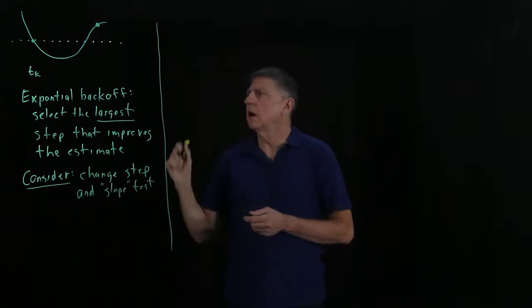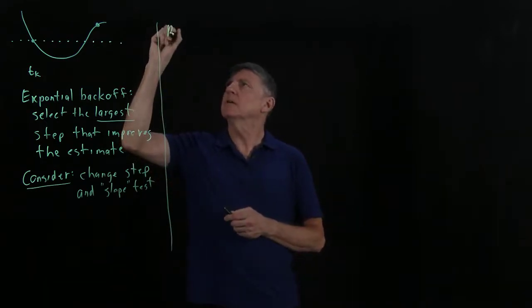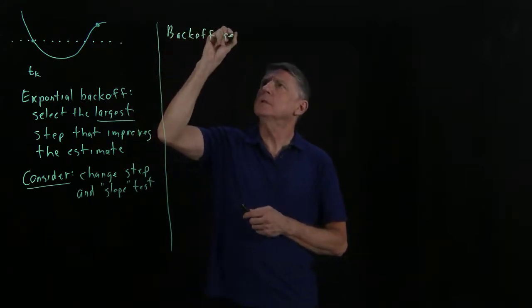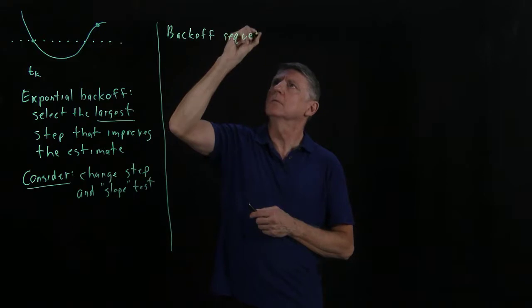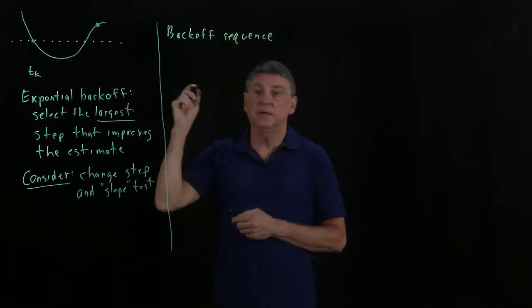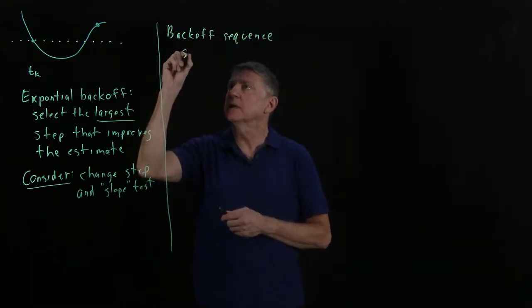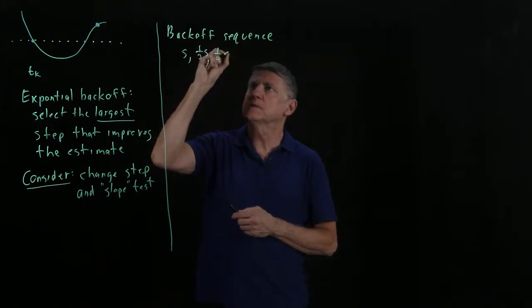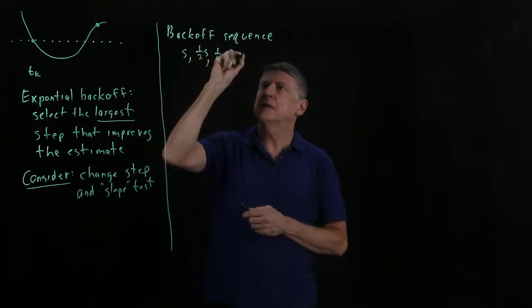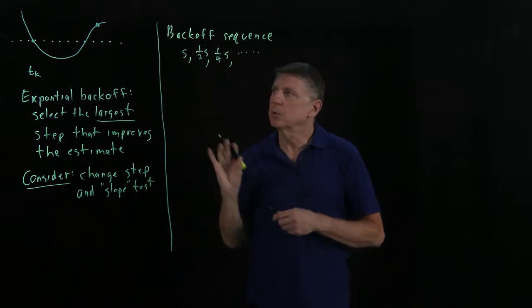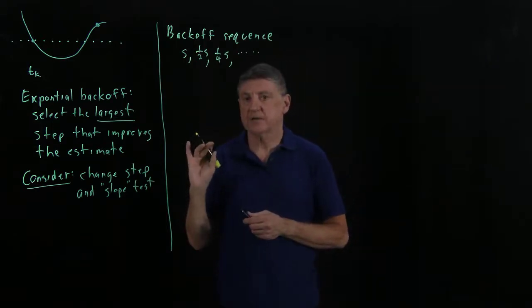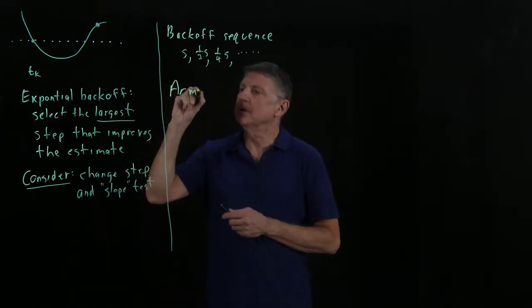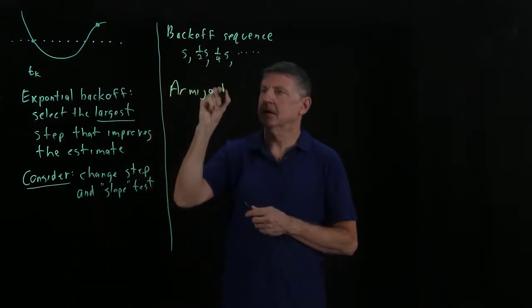Well, our back-off sequence, when we pick a back-off parameter beta equal to one-half, that looked like we would try the step and then one-half of the step and then one-quarter of the step and so on. So here is how backtracking in one example works. And this is Armijo backtracking specifically.